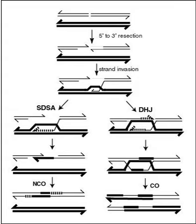Therefore, for genes sufficiently distant on the same chromosome, the amount of crossover is high enough to destroy the correlation between alleles. Tracking the movement of genes resulting from crossovers has proven quite useful to geneticists. Because two genes that are close together are less likely to become separated than genes that are farther apart, geneticists can deduce roughly how far apart two genes are on a chromosome if they know the frequency of the crossovers. Geneticists can also use this method to infer the presence of certain genes. Genes that typically stay together during recombination are said to be linked.